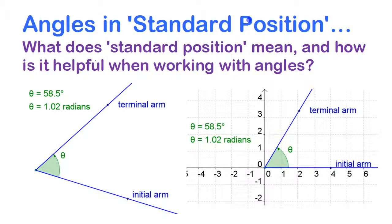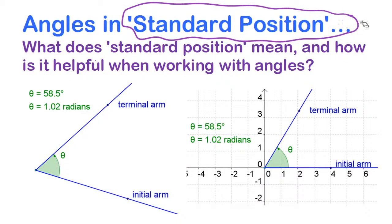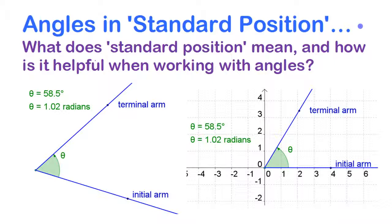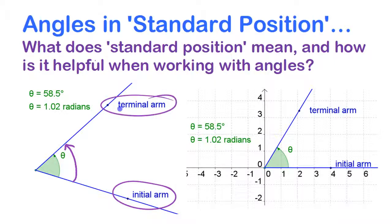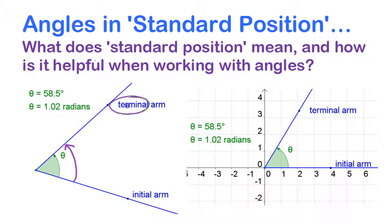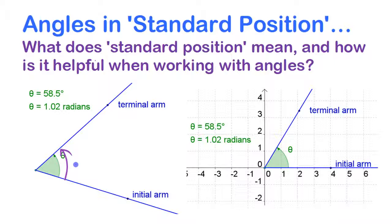We're going to look at angles in standard position and what that term means. An angle is a measure of rotation from one arm — the initial arm — around to the terminal arm, the start and the end. It's not a measure of distance; it doesn't matter whether the arms are short or long. It has to do with how much rotation has happened.